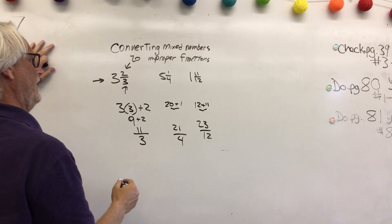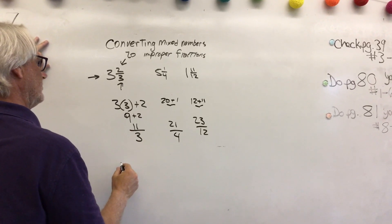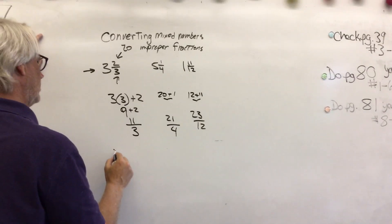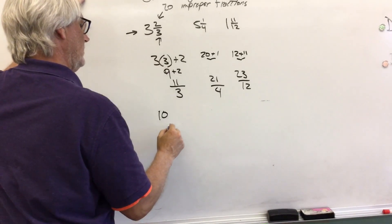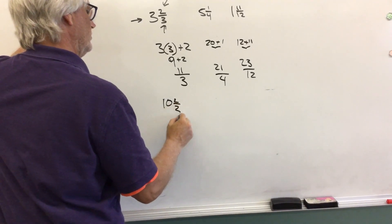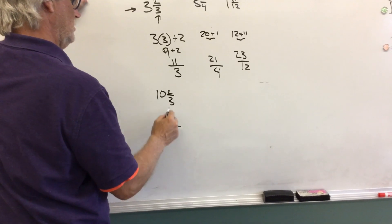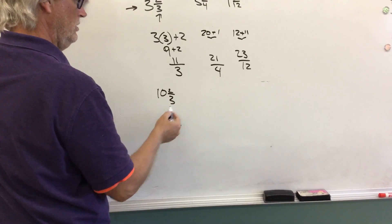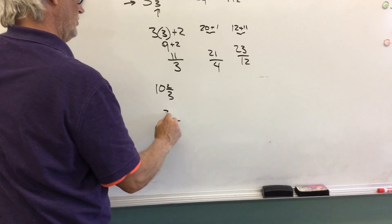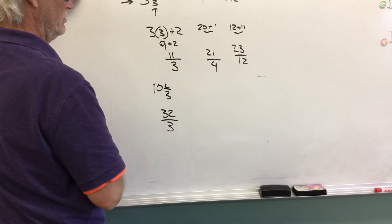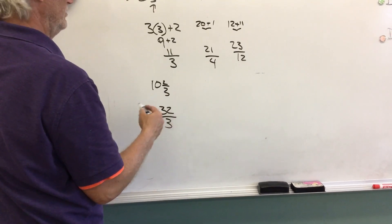What do we want to try now? Let's try something that's maybe a little bit tricky. Let's try 10 and two thirds. So my denominator is going to be 3. So 3 times 10, 30, plus 2, 32 over 3. 10s are a little bit tricky sometimes.